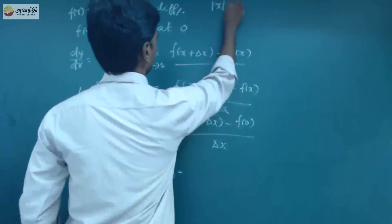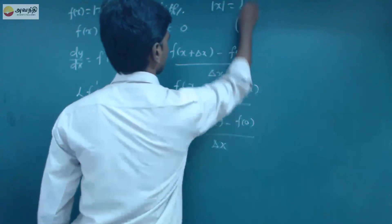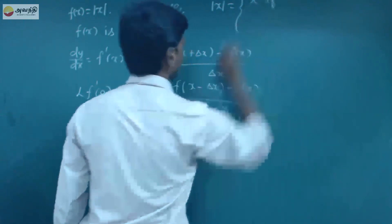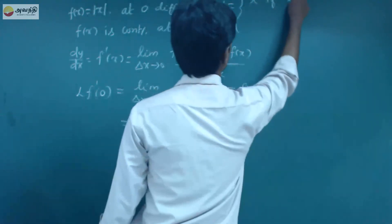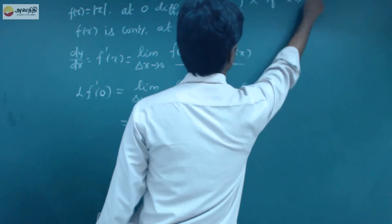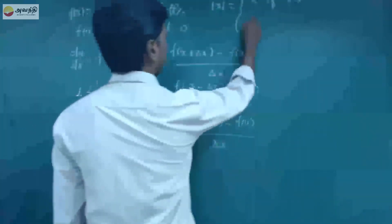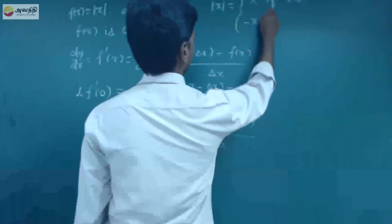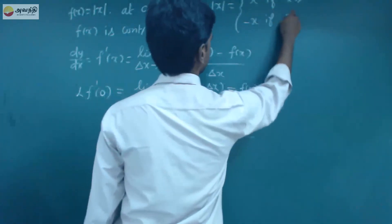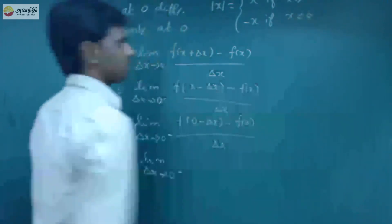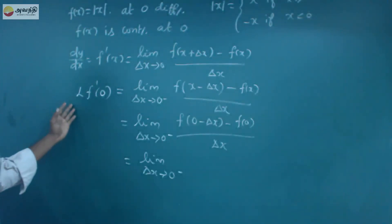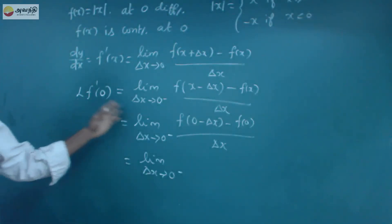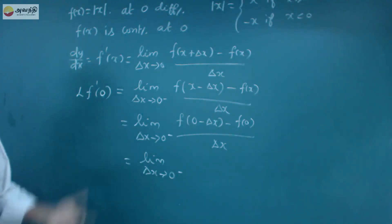Recall that f(x) = |x| means: f(x) = +x when x > 0, and f(x) = −x when x < 0. For the left-hand side at x = 0, we use f(x) = −x.